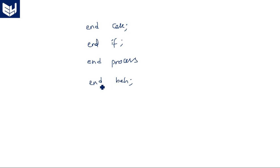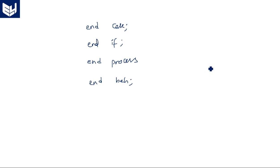This completes both the behavioral model and the dataflow model of the VHDL code for the 2-to-4 decoder. In the next video, I will discuss how to write the structural code for the same 2-to-4 decoder. Thank you.